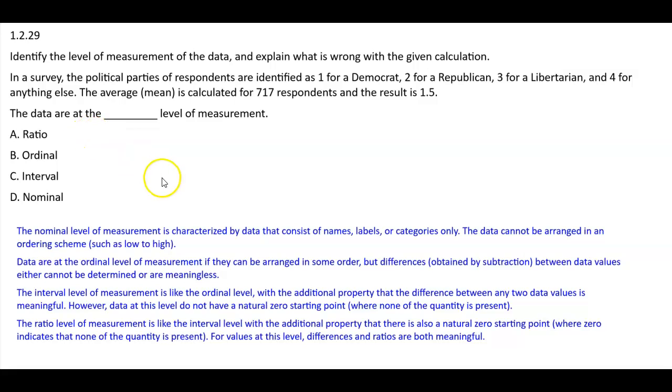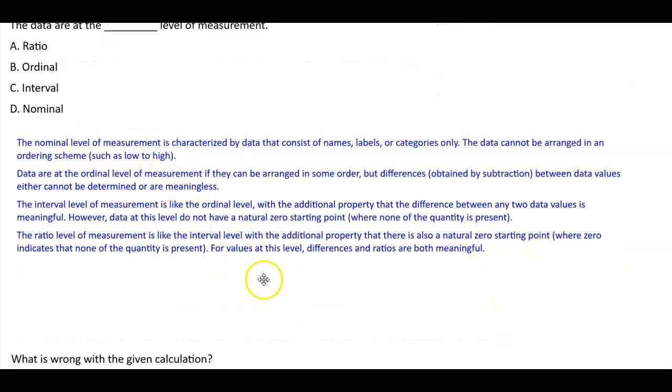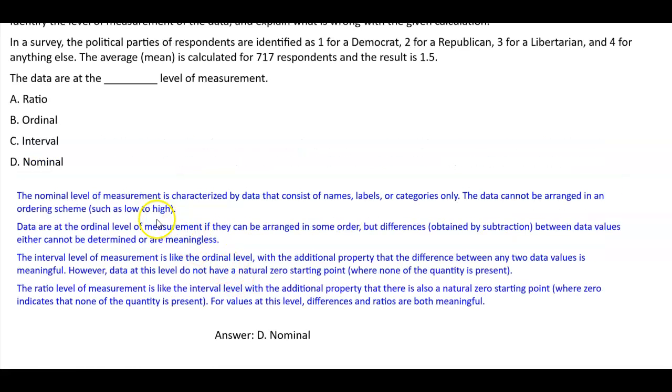The data are at what level of measurement? Well, it's going to be nominal, and the reason why it's nominal is because this is a measurement that is characterized by data that consists of names, labels, or categories only. In this case, this is considered a label or a category. The data cannot be arranged in an ordering scheme such as low or high.